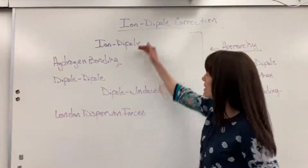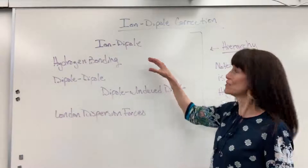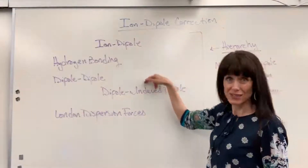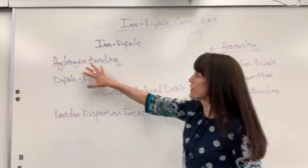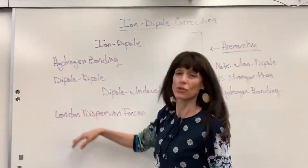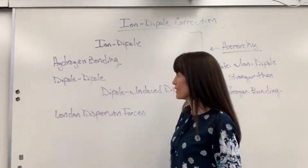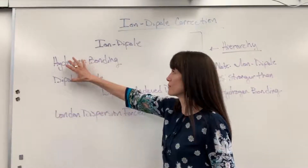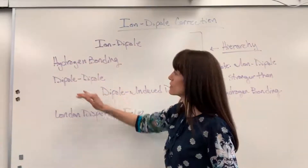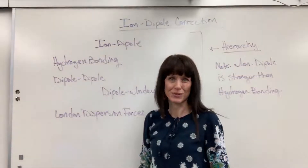Remember the way I write this: ion-dipole and dipole-induced dipole are off to the side because they involve mixtures. The three in the middle — hydrogen bonding, dipole-dipole, and London dispersion — can occur in either mixtures or pure substances.